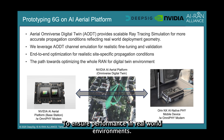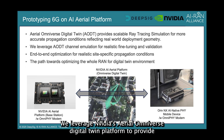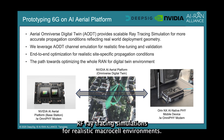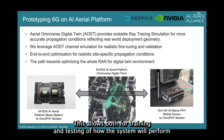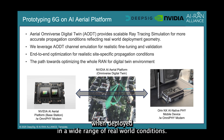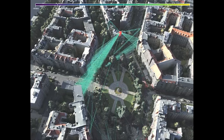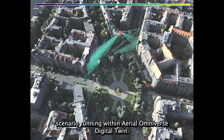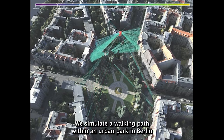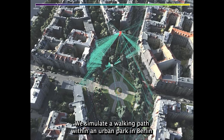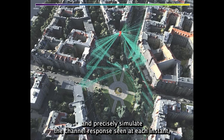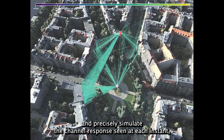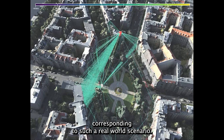To ensure performance in real-world environments, we leverage NVIDIA's Aerial Omniverse digital twin platform to provide RF ray tracing simulations for realistic macro cell environments. This allows both for training and testing of how the system will perform when deployed in a wide range of real-world conditions. Here you can see a simulation scenario running within Aerial Omniverse digital twin — we simulate a walking path within an urban park in Berlin and precisely simulate the channel response seen at each instant, corresponding to such a real-world scenario.